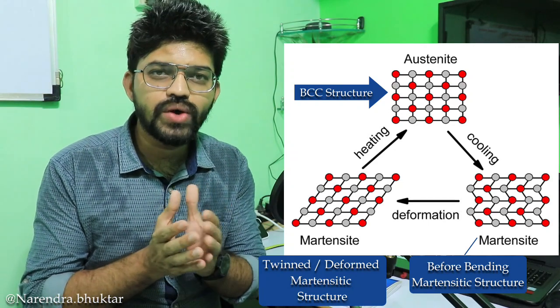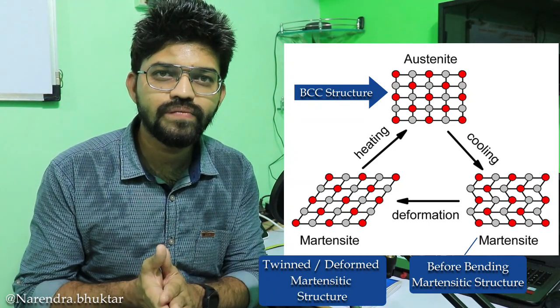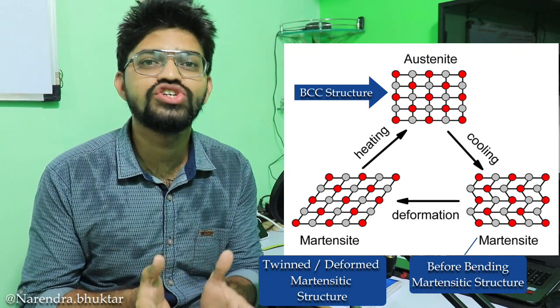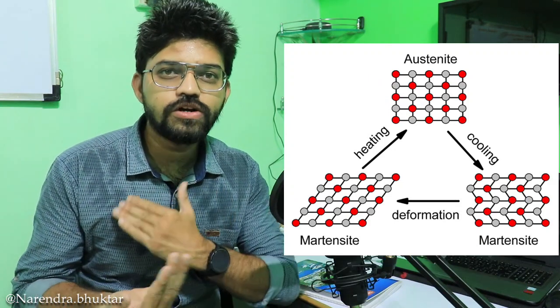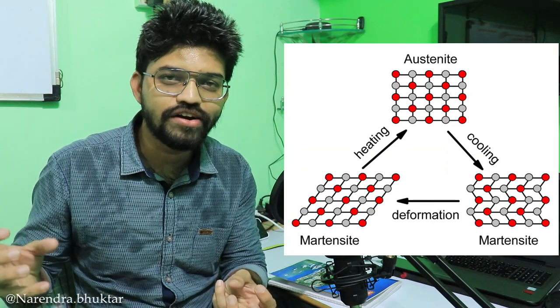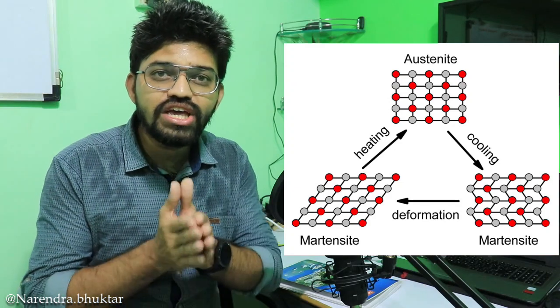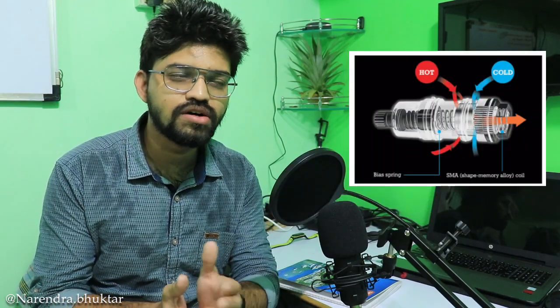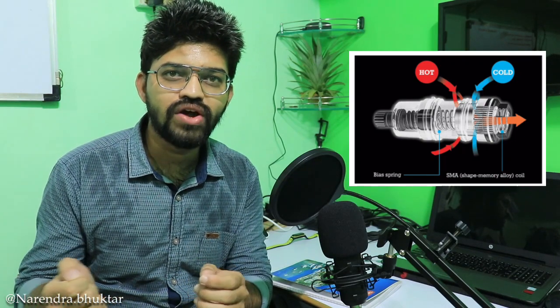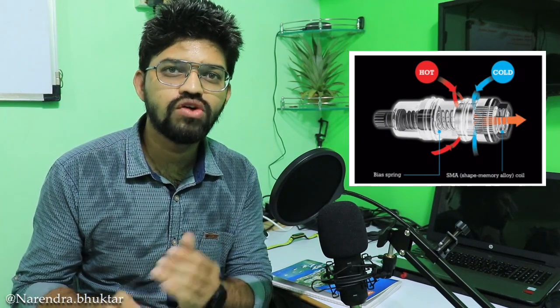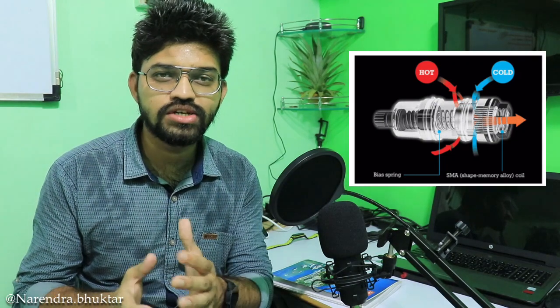In certain metals and alloys, the difference between the lower temperature and higher temperature is just about 10 degrees Celsius. We can manipulate the behavior of that particular material — for example, it is used in thermostats. When the material temperature increases, we can restrict or allow flow at a certain desired temperature. This is how we can train shape memory alloys for specific applications.